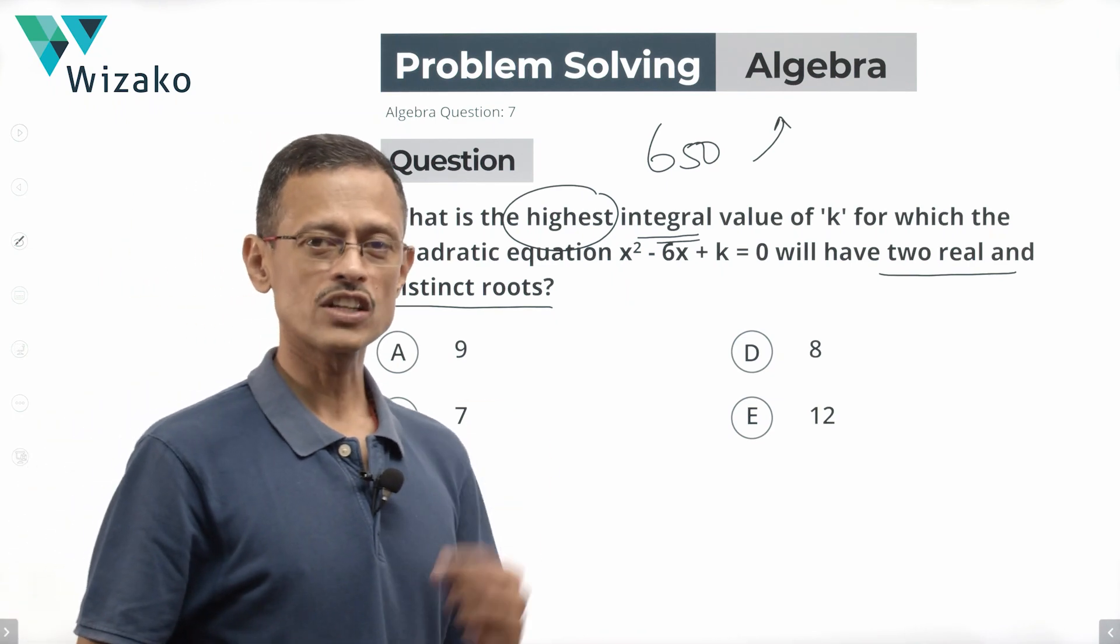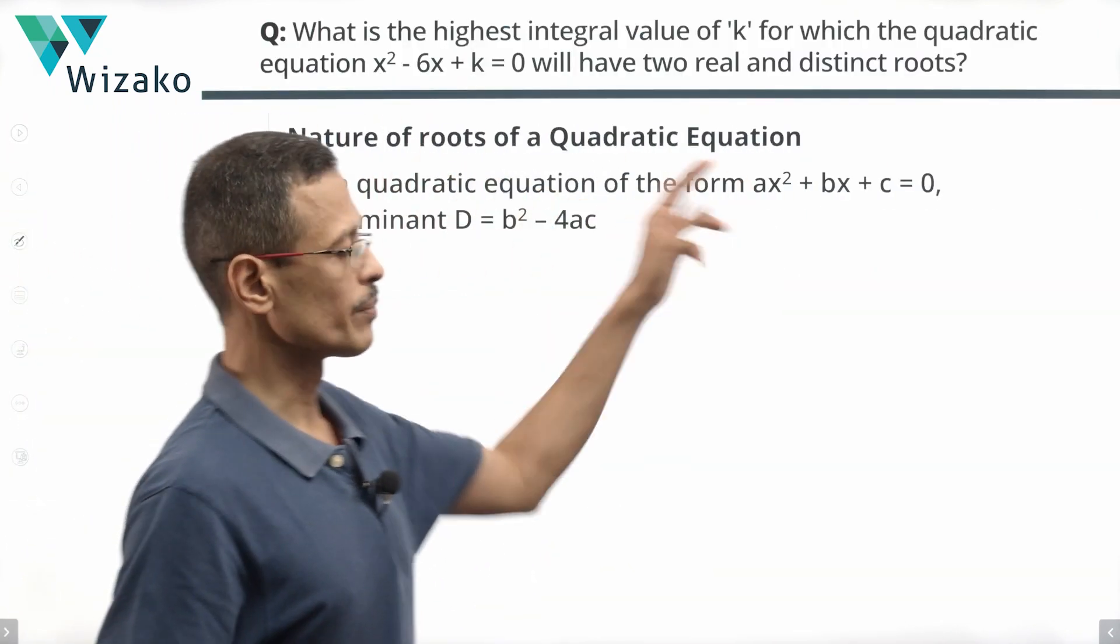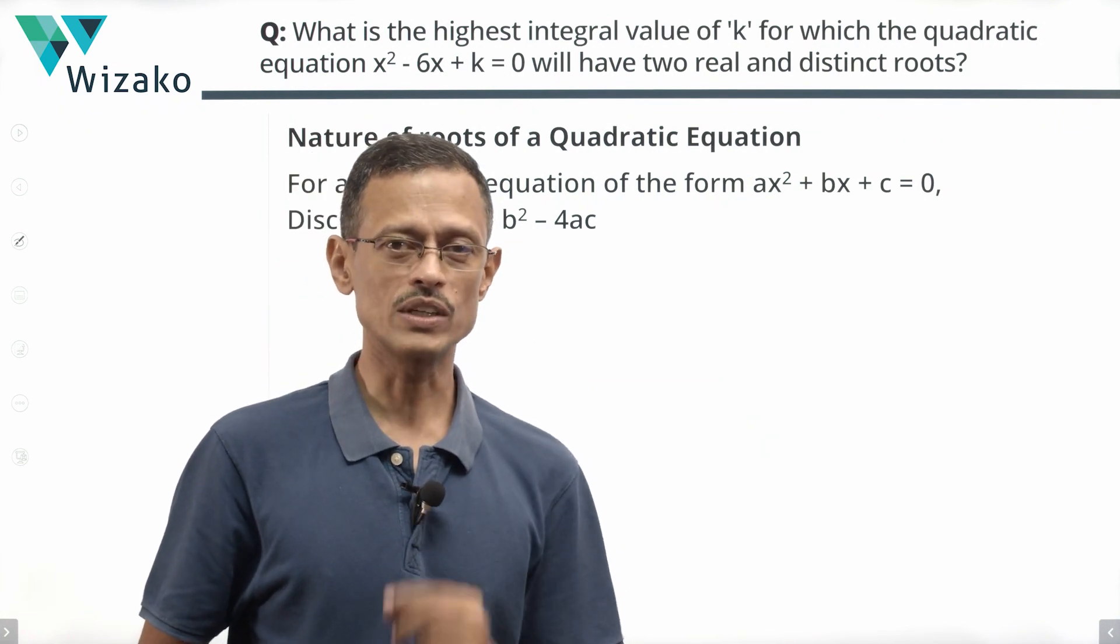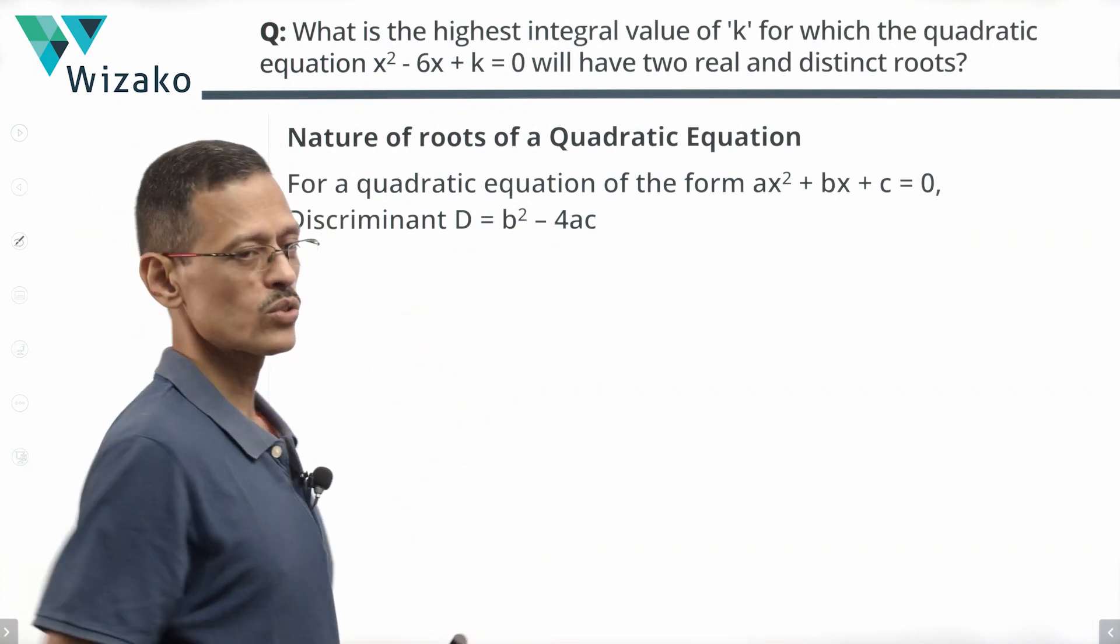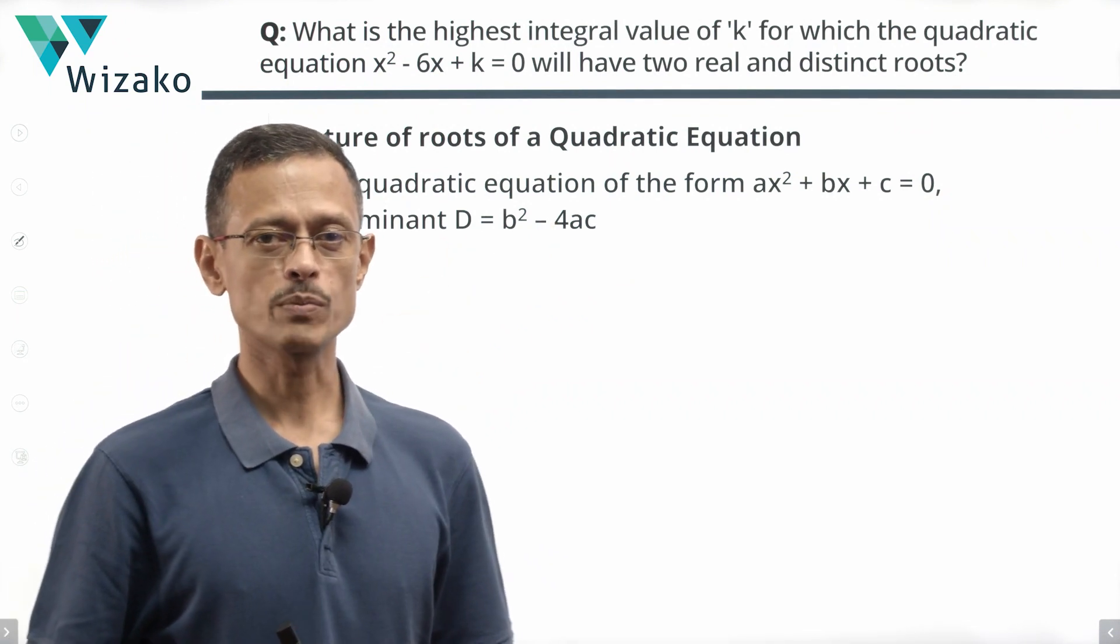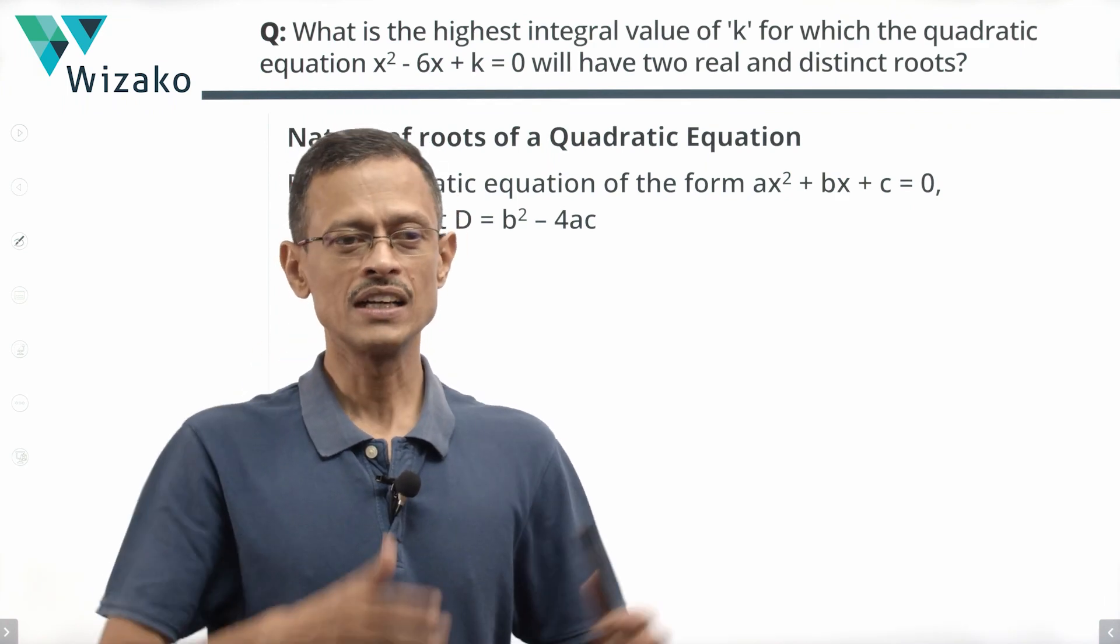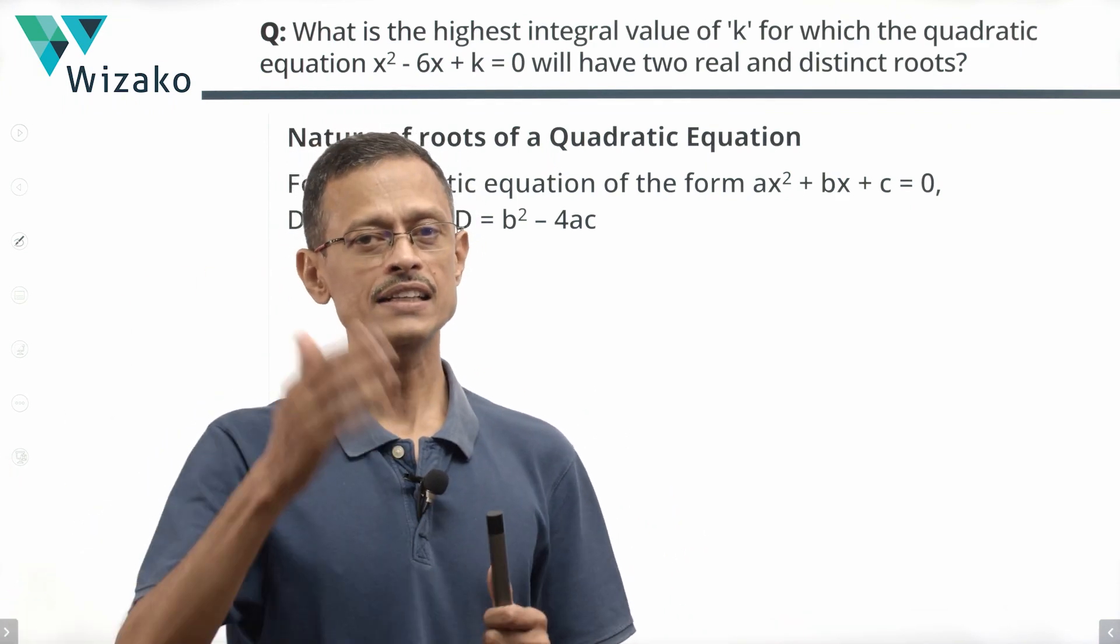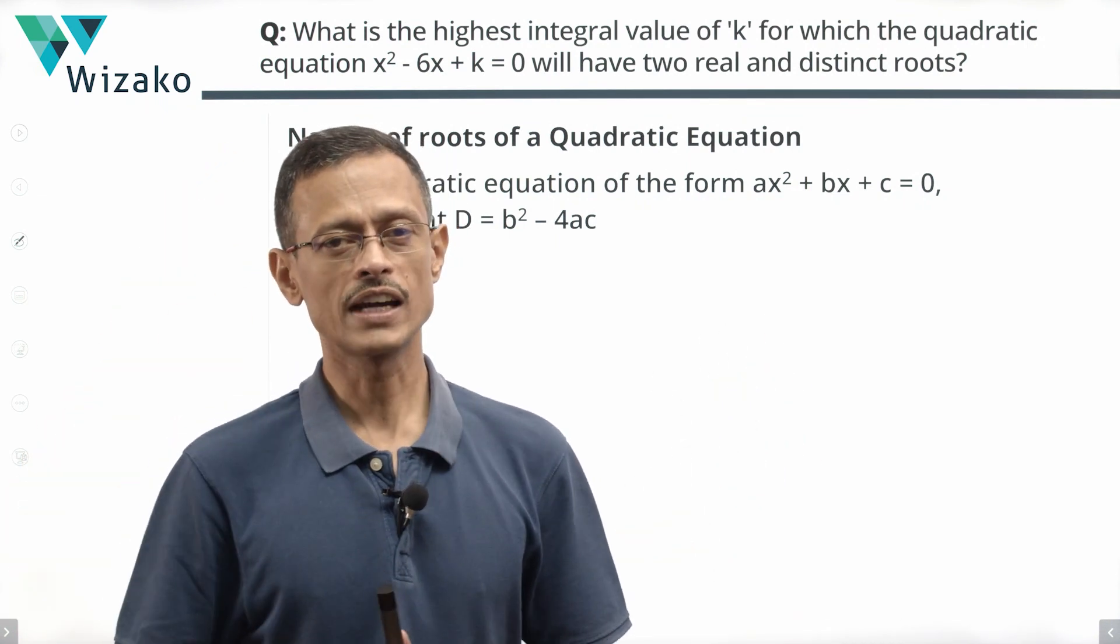Let's get started. Let's start by addressing the nature of roots of a quadratic equation. For any quadratic equation in its generalized form ax² plus bx plus c equals 0, its discriminant is found out using this formula b² minus 4ac. There are three types of nature of roots possible for a quadratic equation depending upon what value the discriminant takes. I'm not deriving that here. We have done that as part of our online course. Here, I'm just going to basically use those values and more.